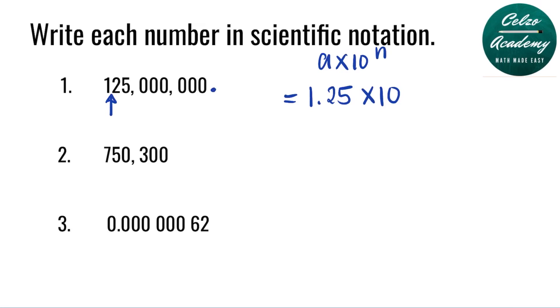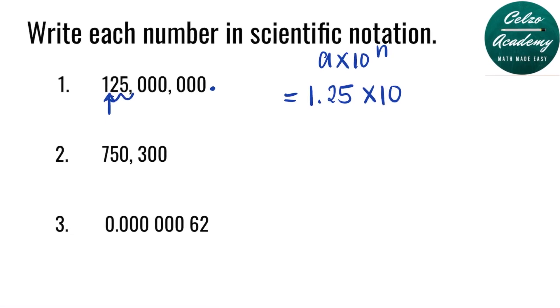To find the value of n, we simply need to count how many digits after the 1. So we have 1, 2, 3, 4, 5, 6, 7, 8. So the answer is 1.25 times 10 to the power of 8.